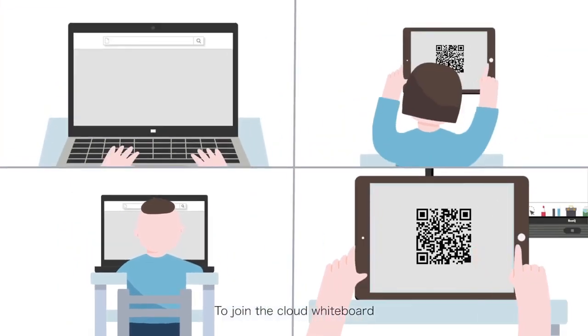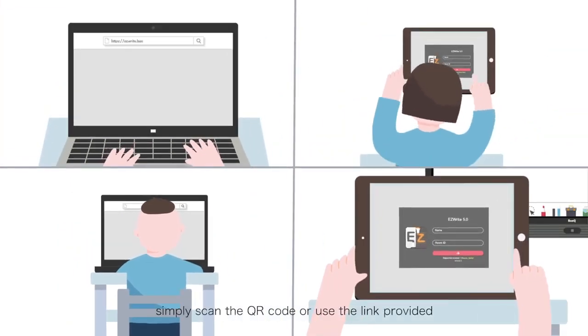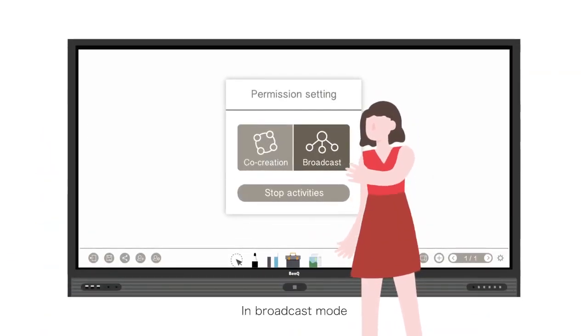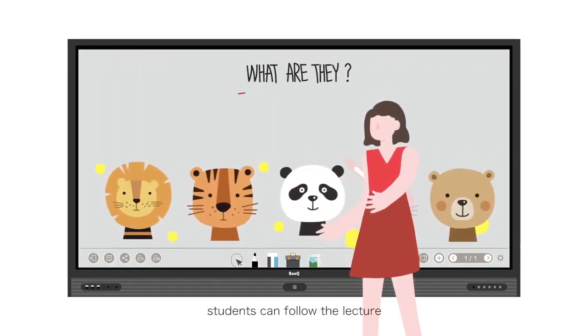To join the cloud whiteboard, simply scan the QR code or use the link provided. EasyWrite offers two types of collaboration modes. In broadcast mode, students can follow the lecture without being able to interrupt the classroom.